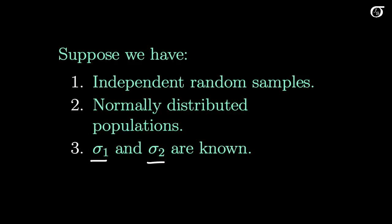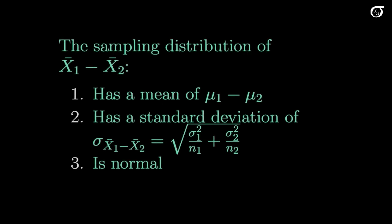We're going to pretend that we know σ1 and σ2 first, because that is a useful starting point. Under those assumptions, the mean of the sampling distribution of x̄1 minus x̄2 is μ1 minus μ2. In other words, on average, x̄1 minus x̄2 equals μ1 minus μ2.